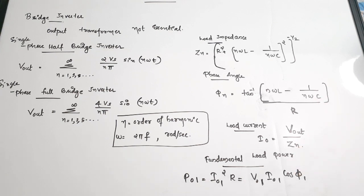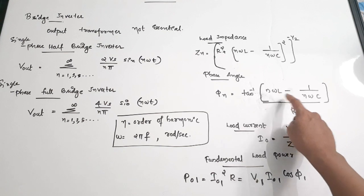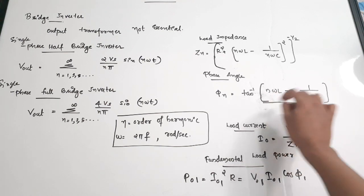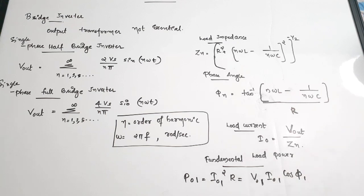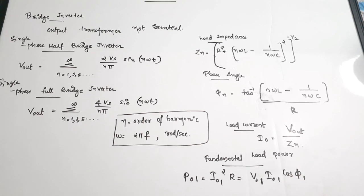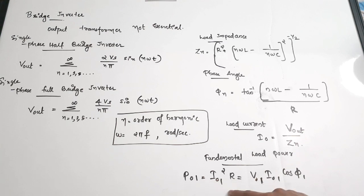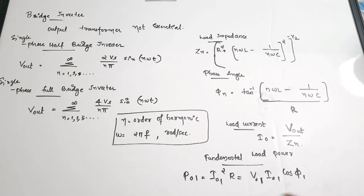The phase angle is given by φn = tan⁻¹[(nωL − 1/(nωC)) / R]. The load current i0 is given by Vout divided by load impedance. The fundamental power is given by P01 = I01² R = V01 × I01 × cos(φ1), which applies to the fundamental harmonic.